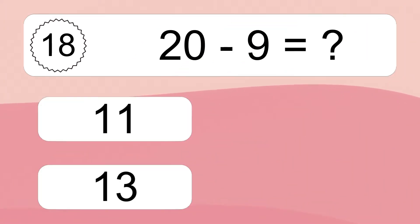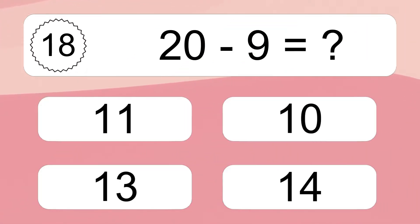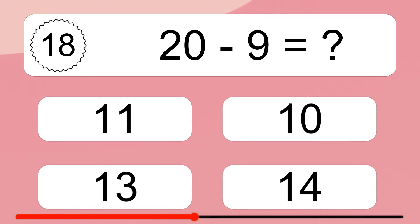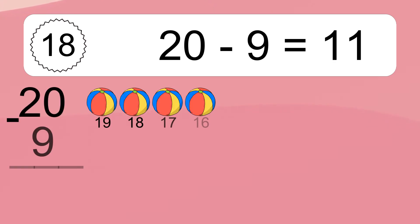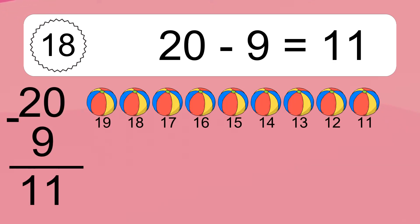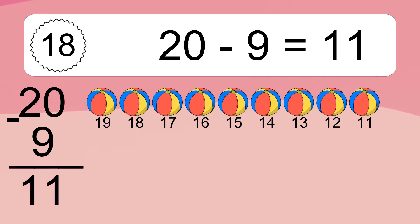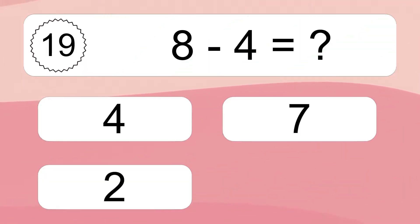20 minus 9 equals what? 20 minus 9 equals 11. Let's count it: 19, 18, 17, 16, 15, 14, 13, 12, 11.